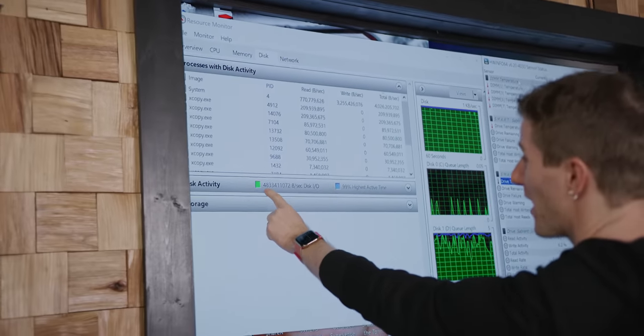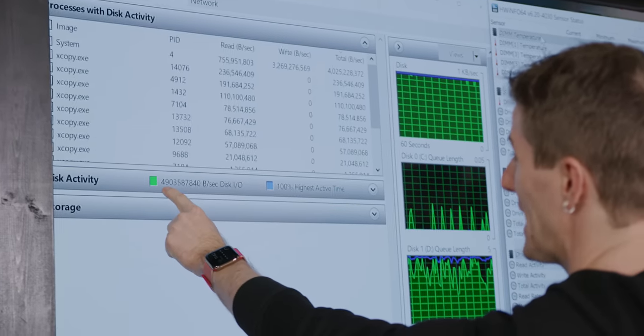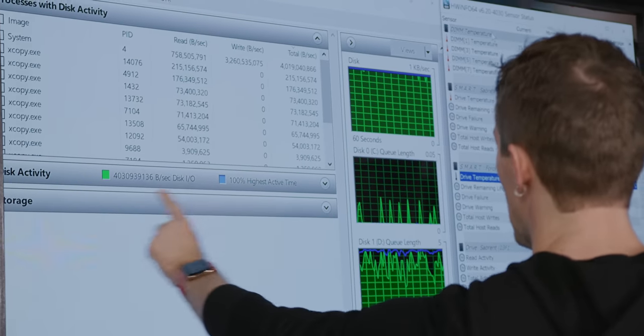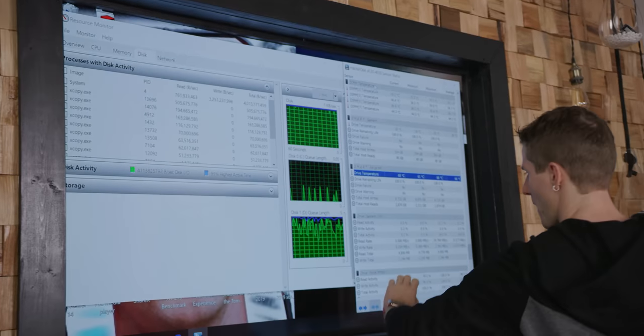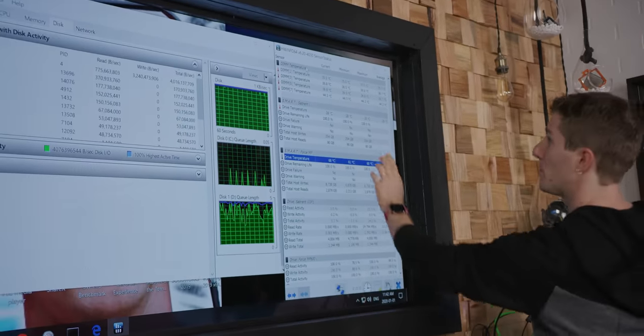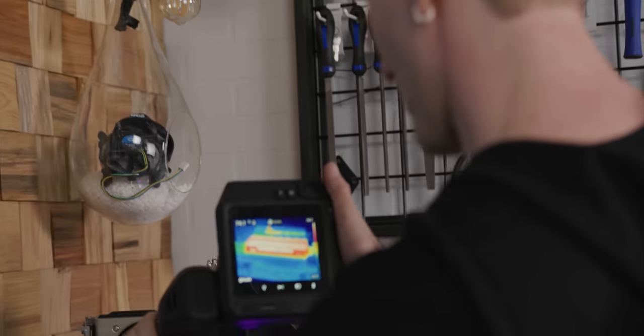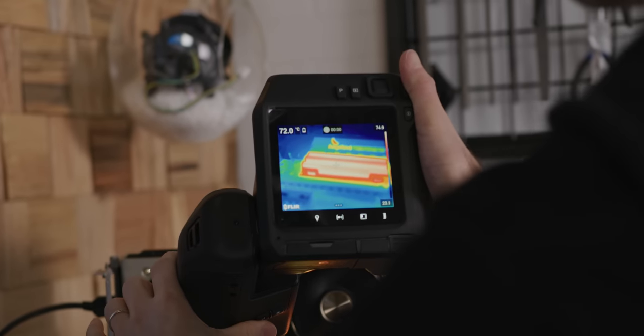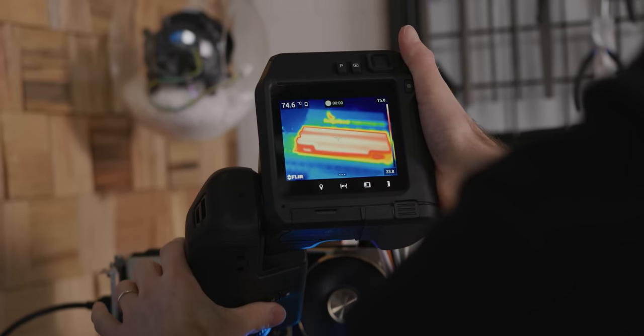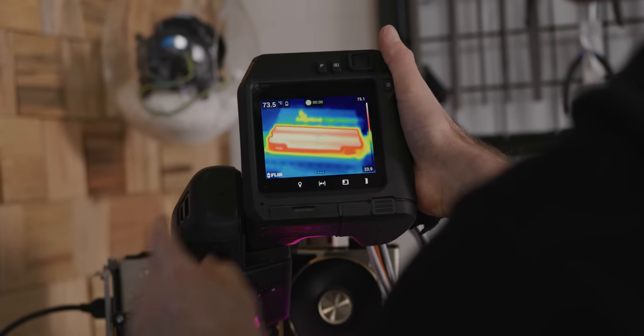So you can see we are actually, we've got almost 5 gigabytes a second of disk activity happening here at a queue depth of about 5, and our drive is reporting in hardware info about 68 degrees, but I don't think that's right, because check this out, ladies and gentlemen. 75 degrees max here running this test.